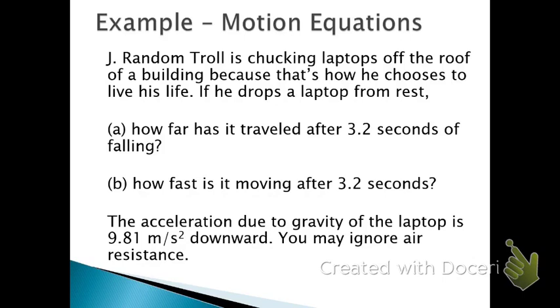One given that you have is that the acceleration due to gravity is 9.81 meters per second squared downward. So let's get started. I'm going to begin by drawing a picture of the scenario so that I can mark my axes, which direction is positive, which is negative, and just kind of orient myself for solving this problem.